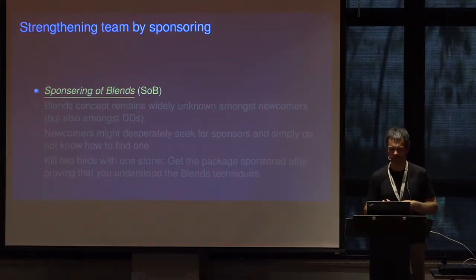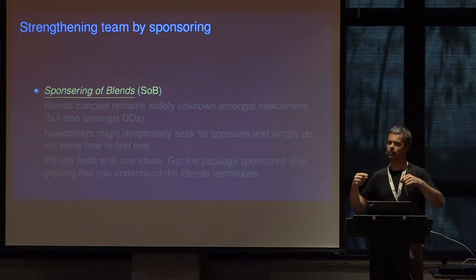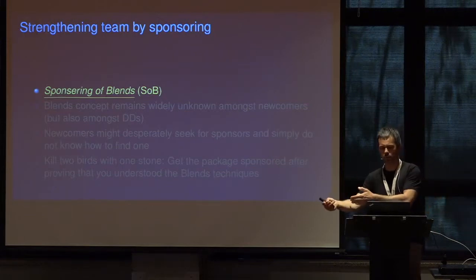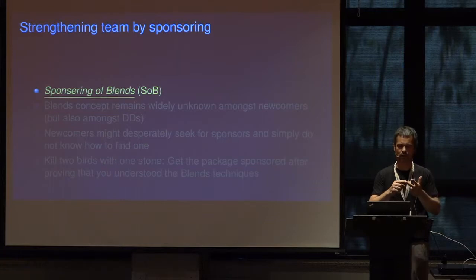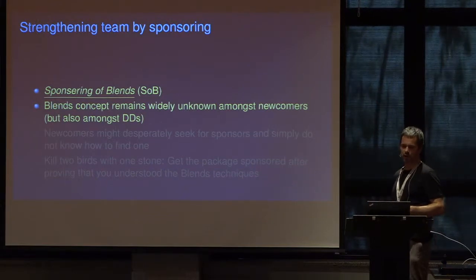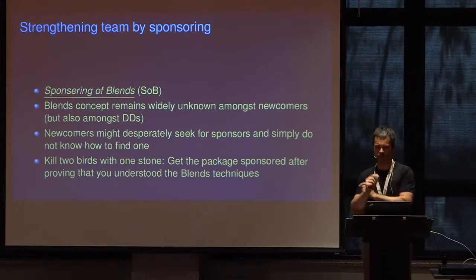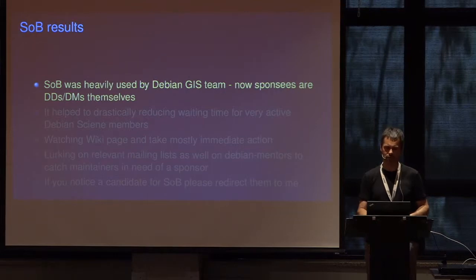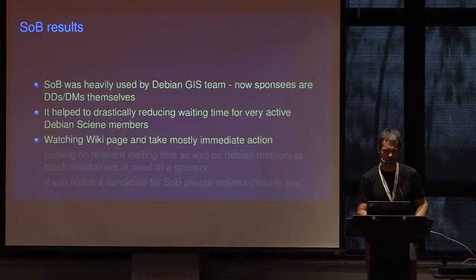The sponsoring concept was well received in the Debian GIS team and helped active Debian Science members who will hopefully soon become Debian developers. We kill two birds with one stone — the package gets sponsored and the sponsee learns the blends concept. There's a wiki page for this. As for whether Debian Science is doing bad QA: we have 1,000 packages and you'll always find 50 with bugs — that's just a lot of packages. If you're bothered by a bug, the solution is 'dch --team', do a team upload. The barrier is lower than an NMU, so anyone blaming us can do something about it.